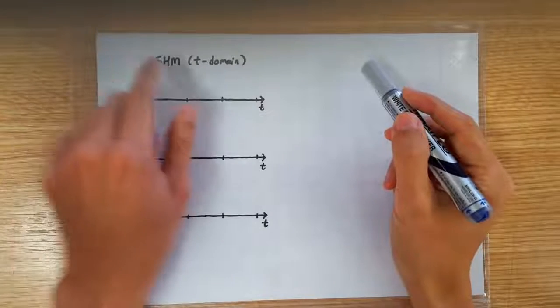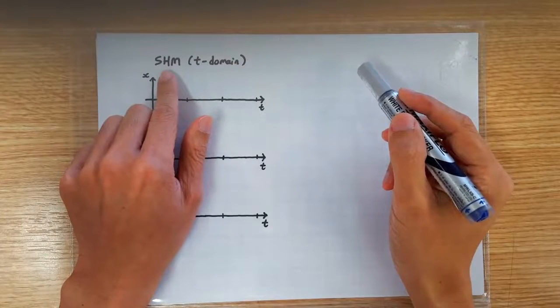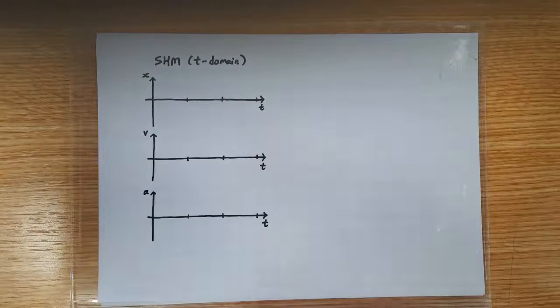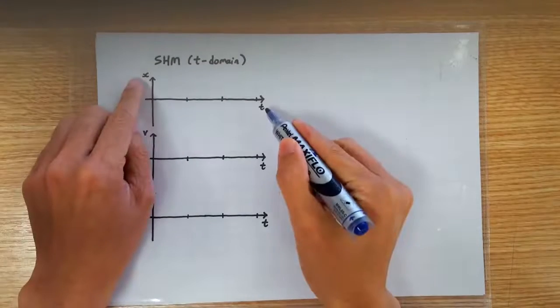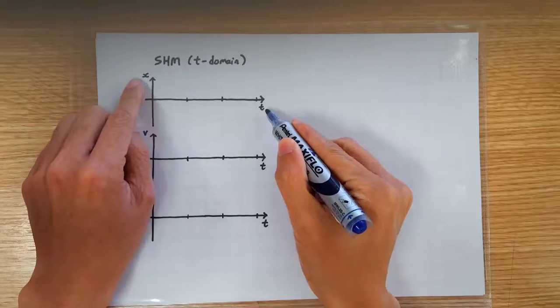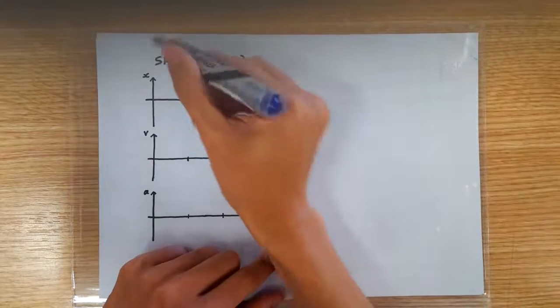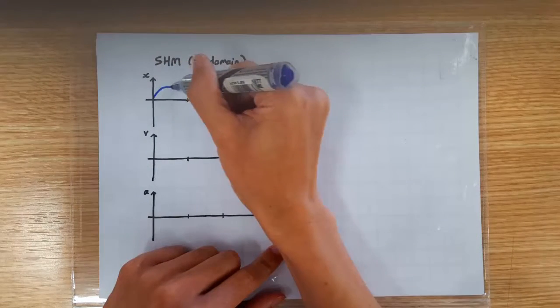Hi, thanks for dropping by. This video is about SHM graphs in the time domain. We'll start with the displacement time graph. For an SHM, the displacement varies sinusoidally with time.